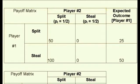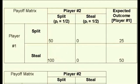Player number 1's actual payoff for choosing steal when player number 2 chooses split will be 100. Multiply that by the probability that player number 2 will choose split. Therefore the expected payoff is the 50% chance that player number 2 chooses split times the certain payoff of 100, when player number 1 chooses steal at that same time. So one half of 100 is 50, and that is player number 1's expected outcome.